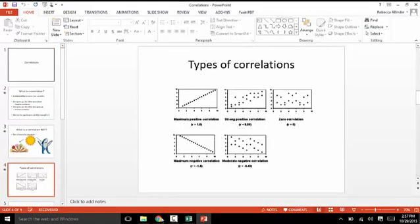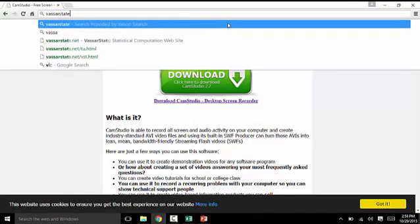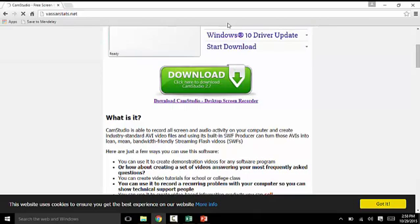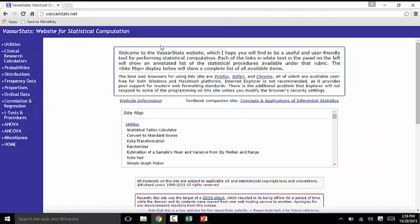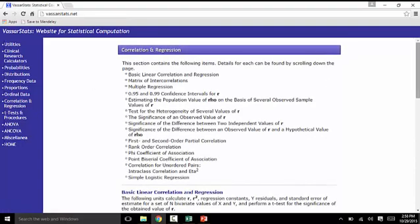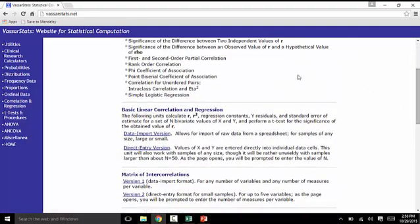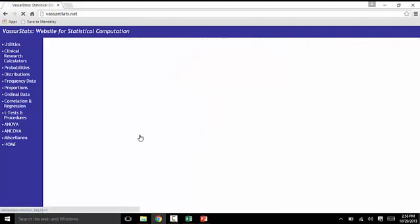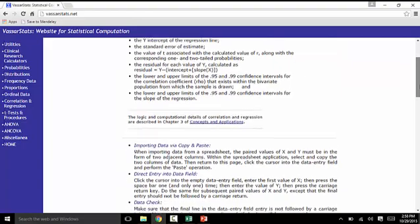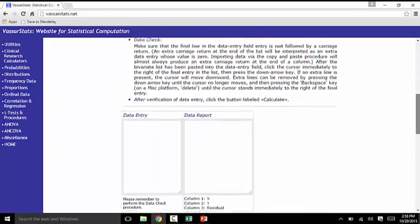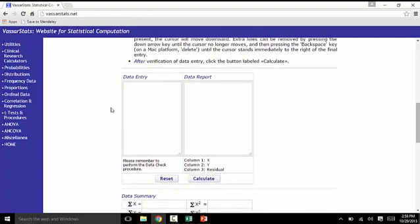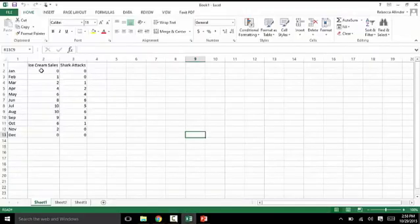So keeping that in mind, let's go to VassarStats. So we will go to VassarStats.net. We will click on correlation and regression, and click on the data import version. You have to scroll down a little bit before you hit data entry, but I'm going to stick with that ice cream sales and shark attacks.